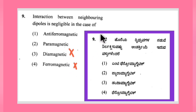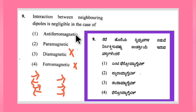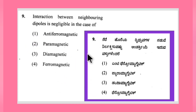Looking at dipole alignment: in ferromagnetic substances the alignment is parallel, and in antiferromagnetic substances the alignment is anti-parallel. In case of paramagnetic substances only, the interactions between neighboring dipoles are minimum. So the right answer is option number 2 — paramagnetic substances.